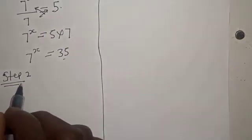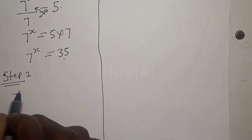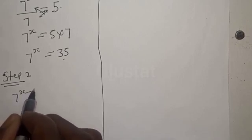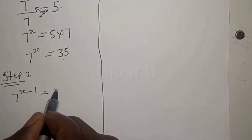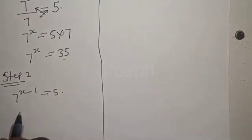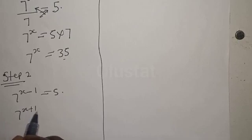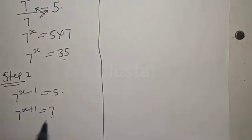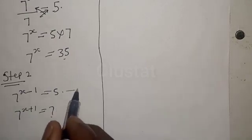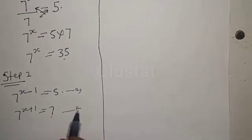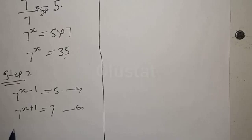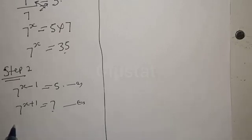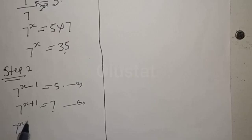Step 2: We have 7 raised to power x minus 1 is equal to 5 — call this equation 1. And 7 raised to power x plus 1 is unknown — call this equation 2. From equation 2 we have 7 raised to power x plus 1.